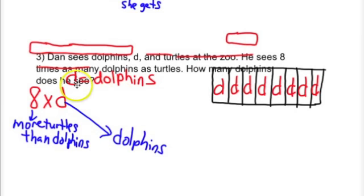We identified what our variable would be and we also identified what the eight would represent. And we modeled that here, 8D, eight times D.